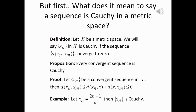That means the sequence converges to 2. Now we can use the previous statement — that every convergent sequence is Cauchy — to show that this sequence is Cauchy. We need to show that as n and m go to infinity, the ordinary distance between the n-th term and the m-th term goes to zero. By the triangle inequality, this distance is less than or equal to the distance between the n-th term and 2 plus the distance between 2 and the m-th term.